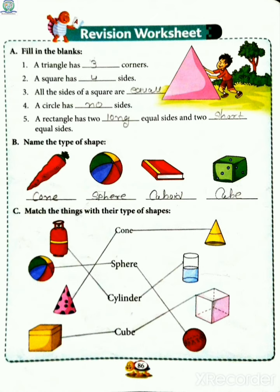And last, dice, jiski shape hooti hai cube. And Exercise C - Match the things with their type of shape.